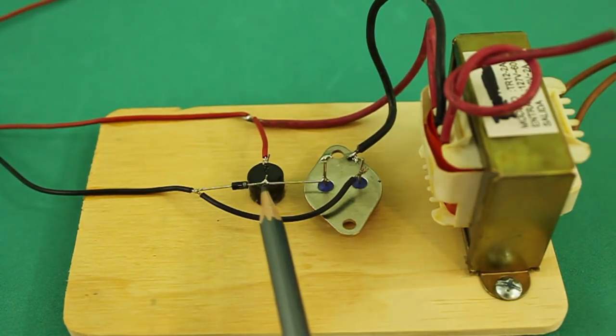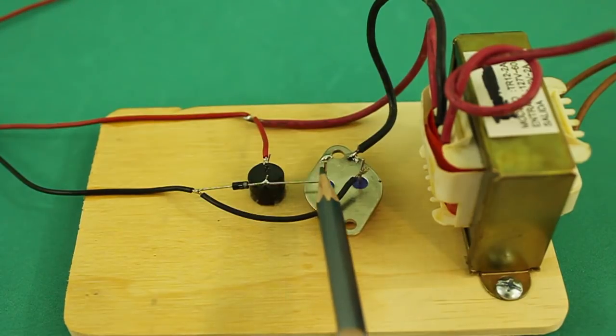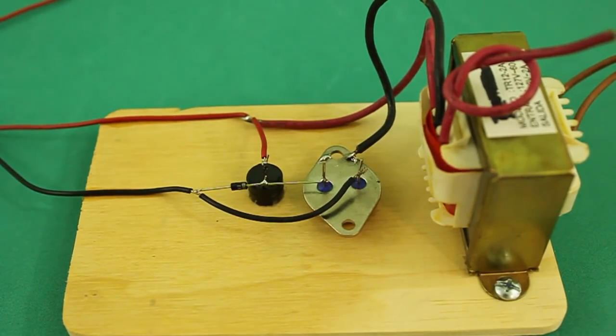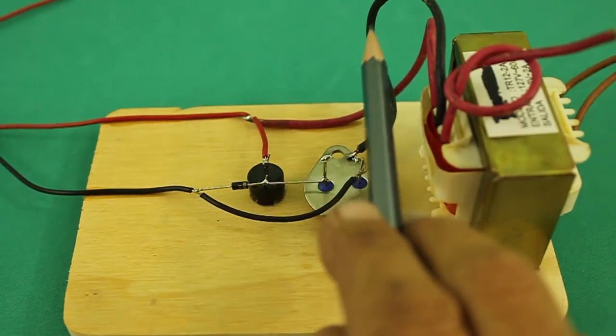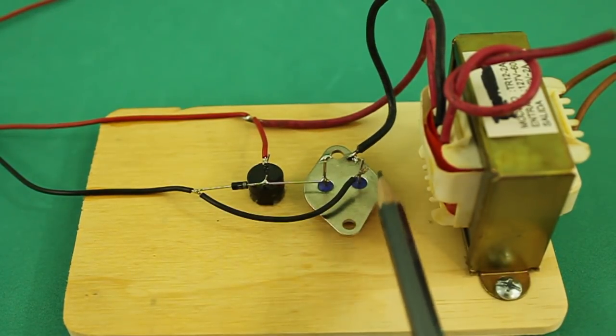The negative of the diode goes to the negative of the buzzer and from there to the base of the transistor. And finally, the center tab of the transformer goes to the collector of the transistor.